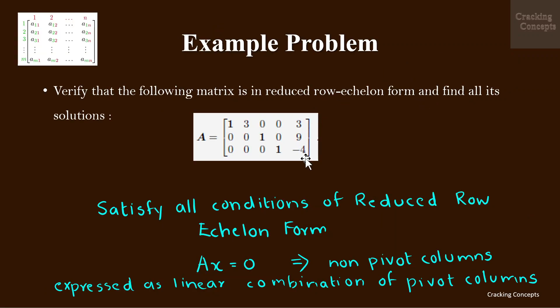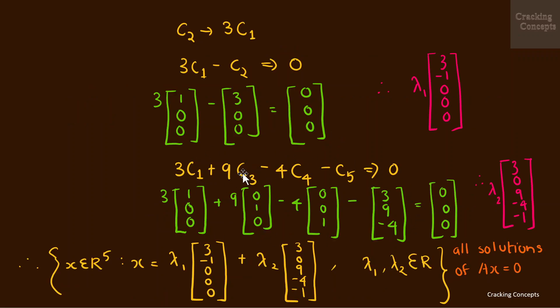Similarly, the fifth column can be represented as 3 times the first column, 9 times the third column, and minus 4 times the fourth column. Since column c2 is absent, its index is taken as 0, giving the vector (3, 0, 9, -4, -1). Since all multiples of this vector are also solutions, we multiply it by scalar lambda 2. To summarize, all solutions of Ax = 0 are x ∈ ℝ⁵ where x = λ₁(3, -1, 0, 0, 0) + λ₂(3, 0, 9, -4, -1), with λ₁ and λ₂ real numbers.